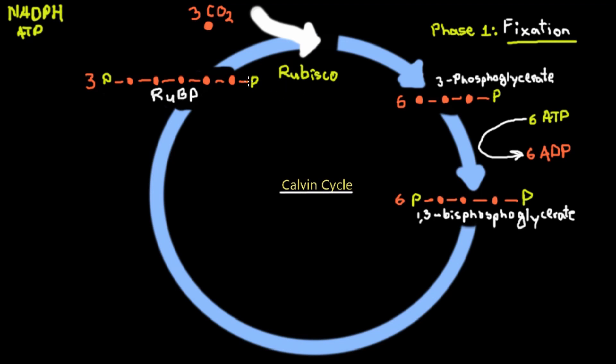This reaction occurs through the action of an enzyme called RuBisCO, which is considered the most important enzyme in the biosphere. By catalyzing CO2 fixation in all autotrophs, it provides the source of organic carbon for most of the world's organisms. RuBisCO fixates carbons from CO2 onto organic molecules, and these organic molecules can then be used by animals and other consumers to produce energy.